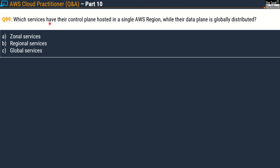Moving on, question 99 says: which services have their control plane hosted in a single AWS region while their data plane is globally distributed? Options are zonal services, regional services, and global services. The correct answer is option C, global services.